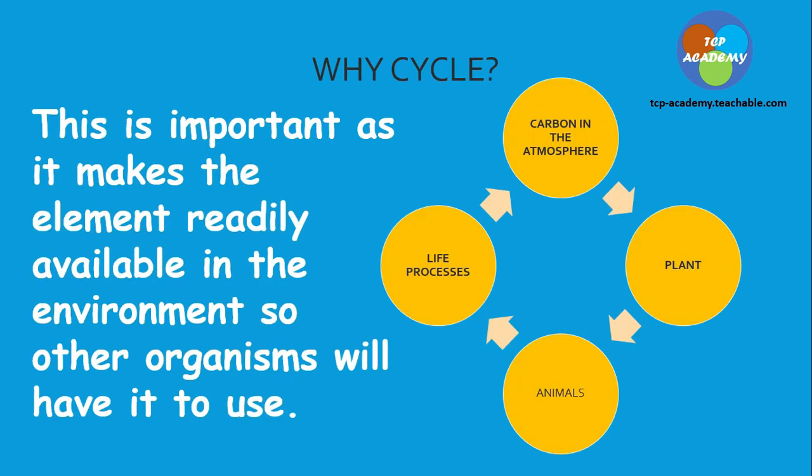Why cycle? The cycle is important as it makes the element readily available in the environment so other organisms can use it. The cycle can be summarized as carbon dioxide in the atmosphere getting into plants, then to animals, then being used in life processes, and eventually returning to the atmosphere.